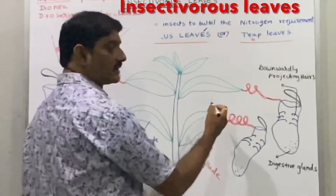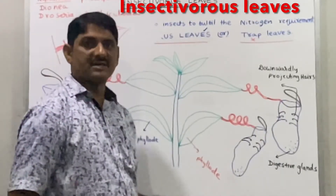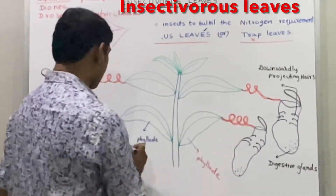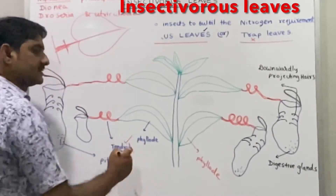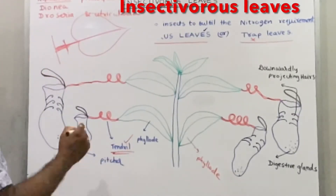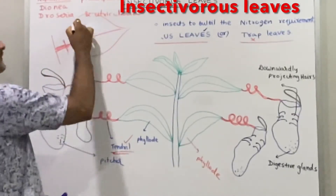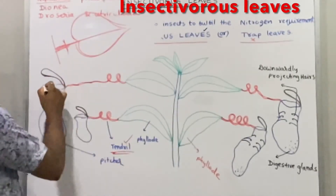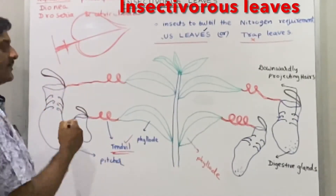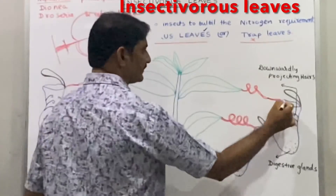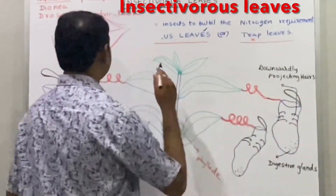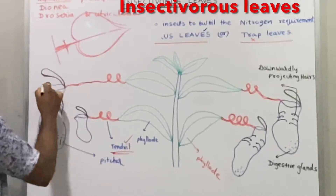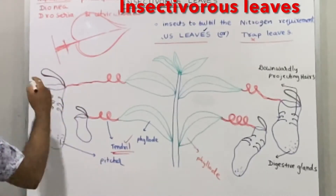The remaining half of the petiole modifies into a very coiled, delicate tendril. The leaf lamina — the entire leaf lamina — modifies into a pitcher structure.